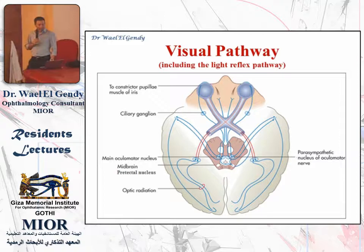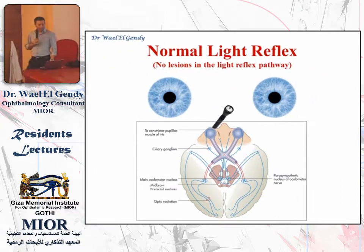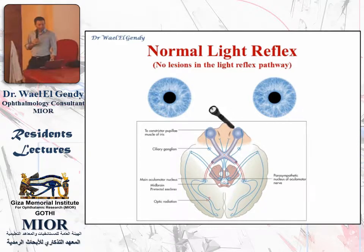Any lesion in front of the light reflex pathway will not affect the light reflex, and any lesion that is behind the light reflex pathway will not affect the light reflex. We will review some lesion stations that can affect the pupil and cannot affect the pupil — ones that can affect the vision but will not affect the pupil. So we will have an example.